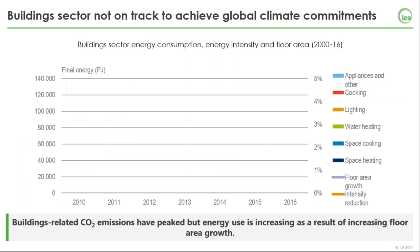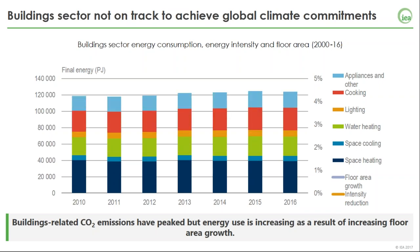Moving on to the building sector: between 2010 and 2016, there's been a slight increase in building energy use. The major end uses are space heating, water heating, and cooking. The reason for the increase is that globally, 2% more floor area is added per year within the building sector, and the rate of energy intensity improvement lags behind this floor area growth. So energy use in the building sector continues to grow as floor area is constructed faster than energy intensity improves.